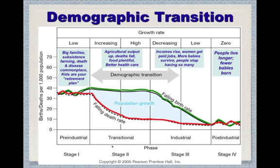Then agricultural output increases and we move into the transitional stage, where there's some surplus from farms. You don't need as many people to work the farm, death rates fall, food is plentiful, more people are surviving, and we have better health care. The birth rate — the green line — stays high but the death rate falls sharply, meaning the population is going to grow.